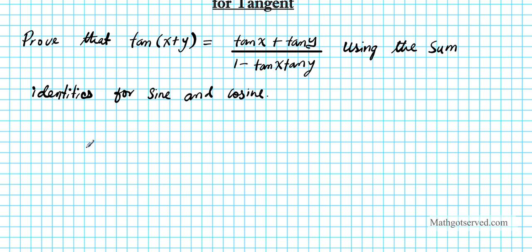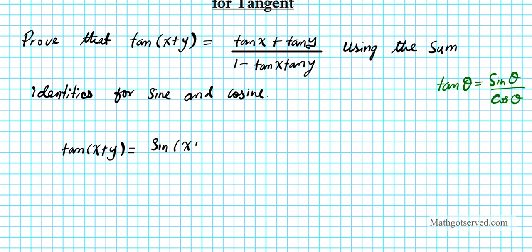We are going to start with tan(x + y). We know from our quotient identities that tan θ equals sine θ over cosine θ. In this case, x + y is basically θ, so we are substituting x + y for θ. That gives us sine of (x + y) divided by cosine of (x + y).